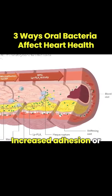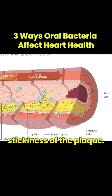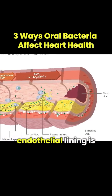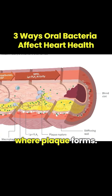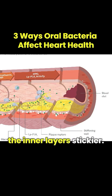The third way is increased adhesion or stickiness of the plaque. The inner layer underneath the endothelial lining is where plaque forms. High-risk oral bacteria and substances make the inner layers stickier.